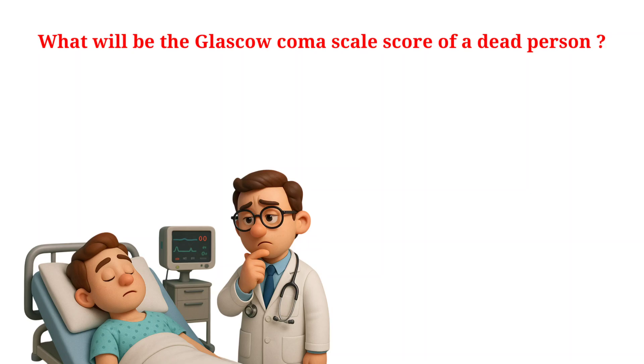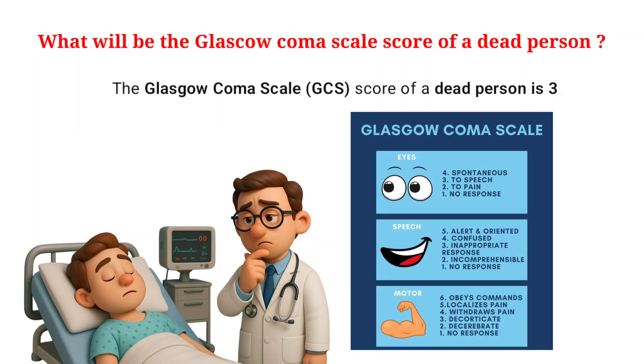What will be the Glasgow Coma Scale score of a dead person? The Glasgow Coma Scale score of a dead person is 3, which is the lowest possible score.